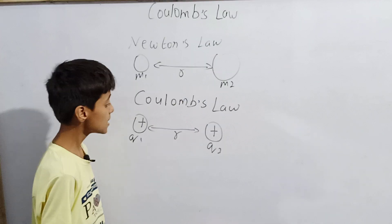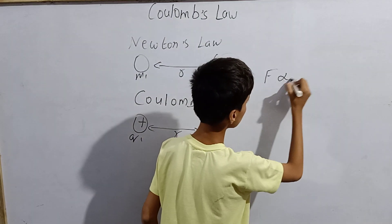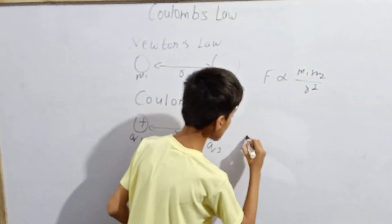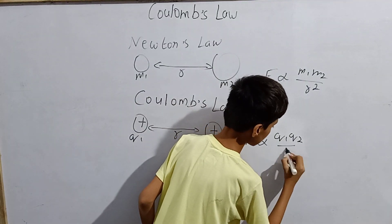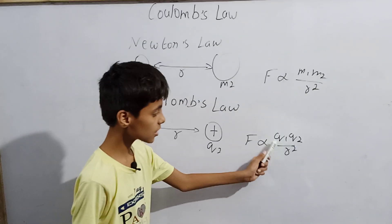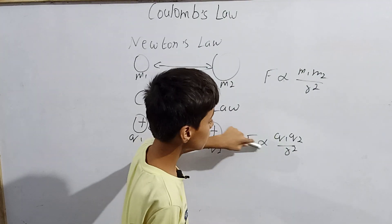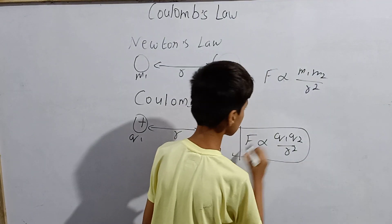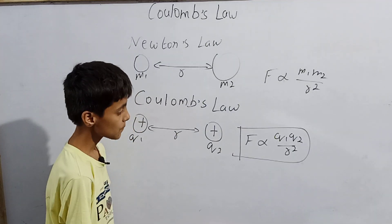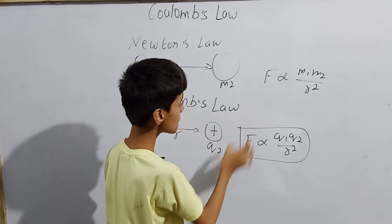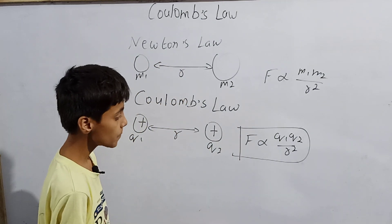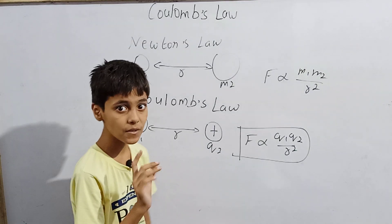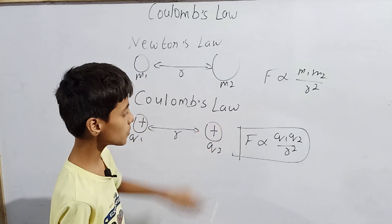In Newton's law, F is proportional to M1×M2 divided by R². But in Coulomb's Law, F is proportional to Q1×Q2 divided by R². This force is directly proportional to the product of the charges and inversely proportional to the square of the distance between them. Both Newton's Universal Law of Gravitation and Coulomb's Law follow the inverse square law, because F is proportional to 1/R² in both cases.